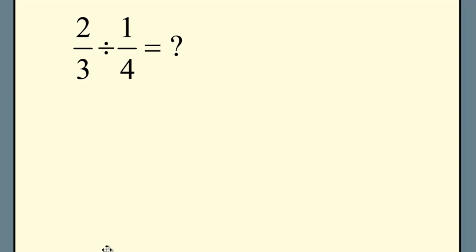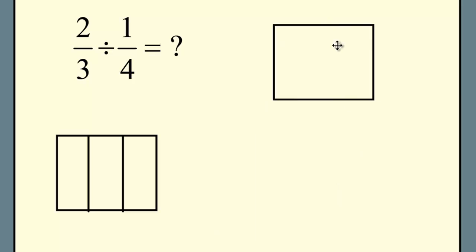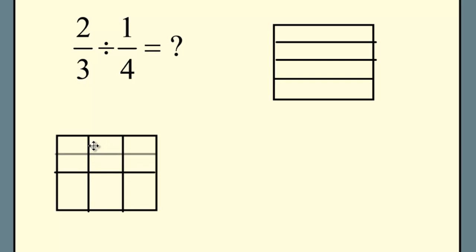Let's start with our rectangle tool and divide it into thirds. Two thirds would obviously be the first two vertical bars. Before coloring those in, let's look at what one fourth would look like. I'm going to divide my rectangle into four horizontal sections. So I'm asking how many of the top row here — which is one fourth — would I need to make two vertical bars? I could solve it by taking the original two thirds rectangle and dividing it into fourths.